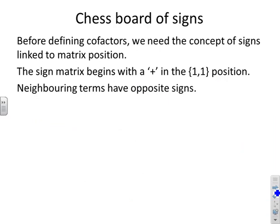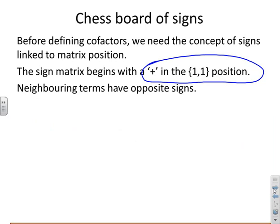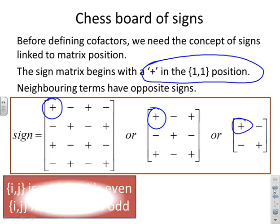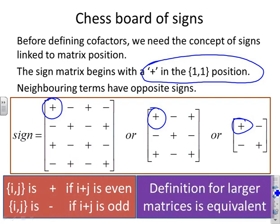What about the sign matrix? Well, you remember we said you always start with a positive in the 1-1 position. And the neighbouring terms have opposite signs. So the sign matrix should be easy. For a 4x4, I put a plus in the 1-1 position. And the neighbouring positions have opposite signs. For the 3x3, a plus in the 1-1 position. For the 2x2, a plus in the 1-1 position. And hopefully you can see the extension of this to larger matrices is straightforward. And it's also easy to see that if i plus j is even, then the corresponding sign is positive. And if i plus j is odd, the corresponding sign is negative.